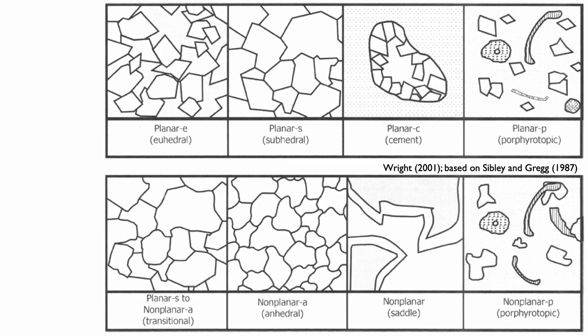Let's review first the planar dolomites. A planar dolomite can be euhedral, known as planar E, if the minerals are clearly expressed. They are euhedral minerals, so you can clearly see those mineral planes and the mineral shape and their habits.